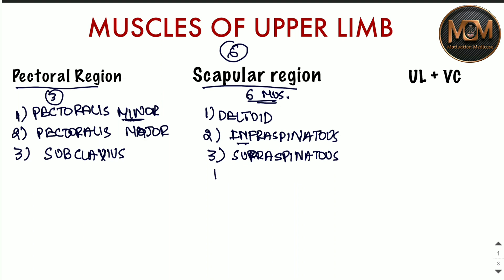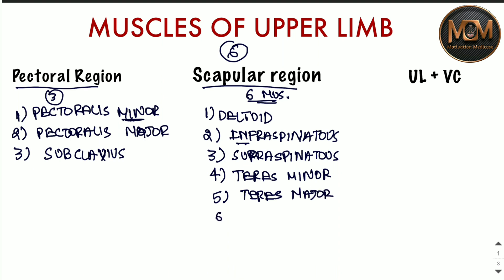The fourth muscle of the scapular region is teres minor — and as I mentioned, if there is a minor there is a major as well — so the fifth one is teres major. The sixth and last one is subscapularis. So those are all six muscles of the scapular region.